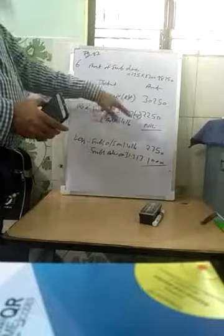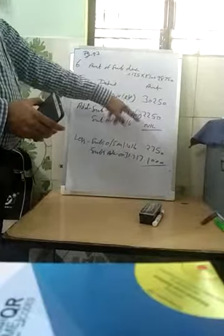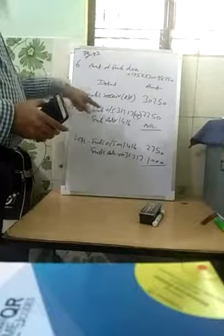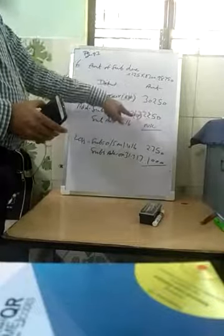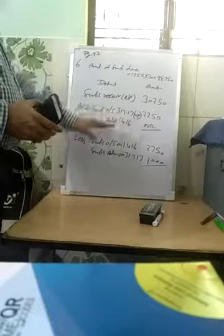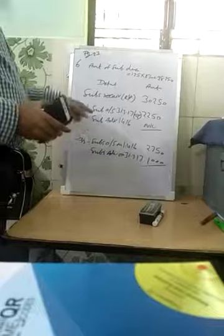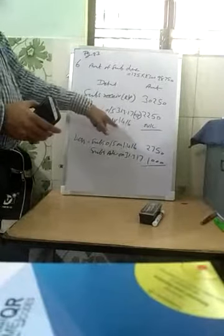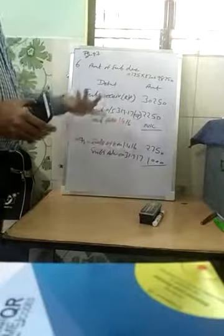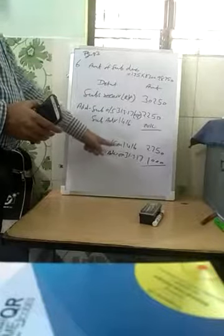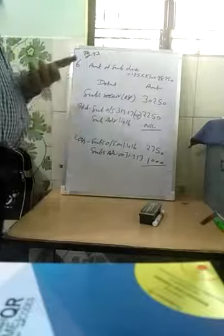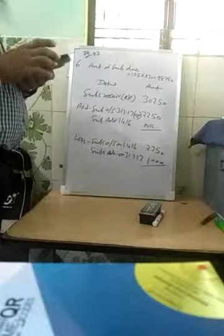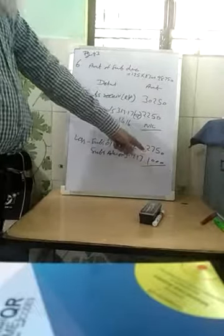Add subscription outstanding on 31st March 2017 — this is not directly given in the question; we calculate it via Working Note 1. The answer is Rs. 2,250. Subscription advance at the beginning is nil — no information given. Subscription outstanding at the beginning (1st April 2016) is Rs. 2,750 — this is outstanding at the beginning, so it will be minus.